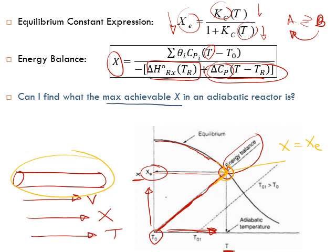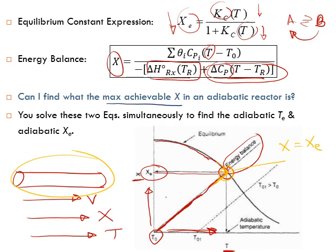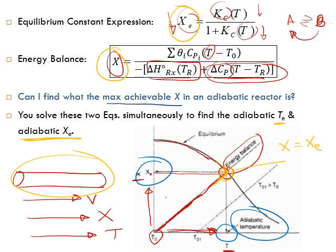If the reactor is long enough for equilibrium to be reached, this is the maximum conversion achievable. Solving these two equations simultaneously gives us the adiabatic equilibrium temperature and the adiabatic equilibrium conversion — the temperature at this intersection point is called the adiabatic equilibrium temperature, and the conversion is called the adiabatic equilibrium conversion.